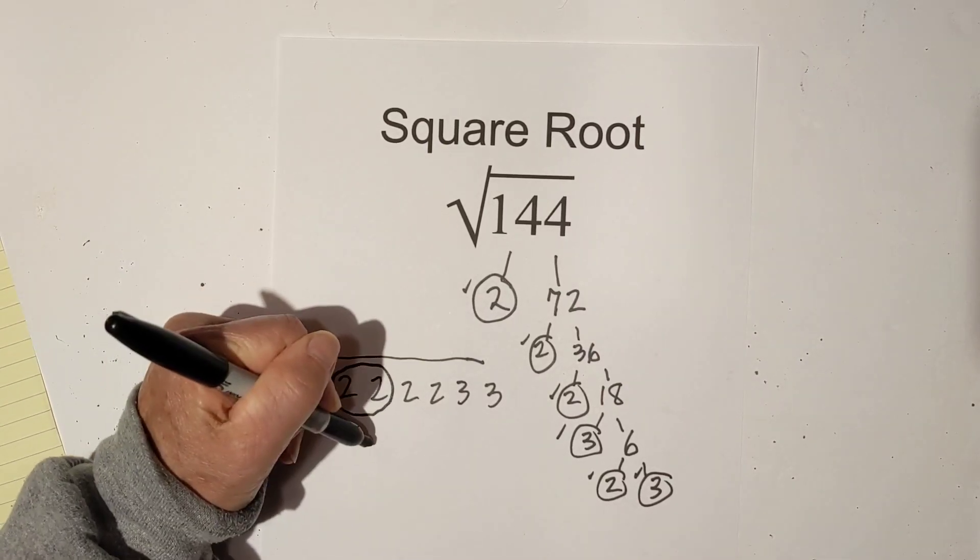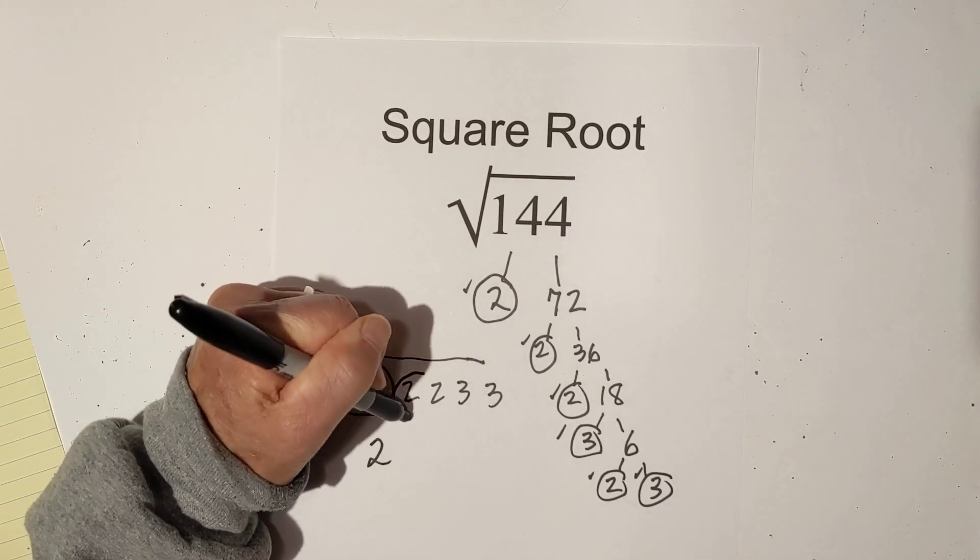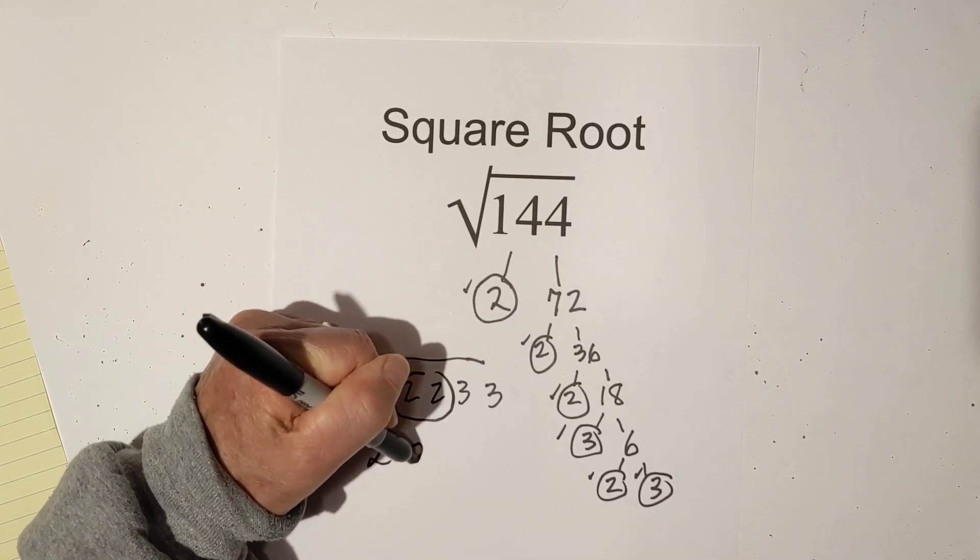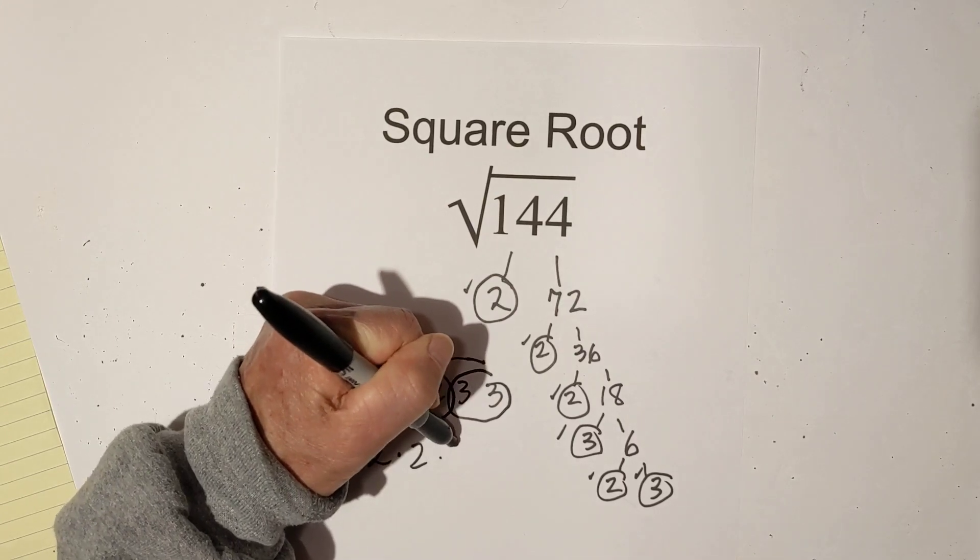So we've got one pair here. So I'm going to write a 2 here. Another pair here. And then another pair of 3s.